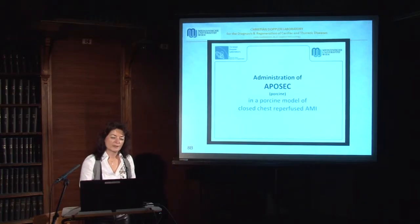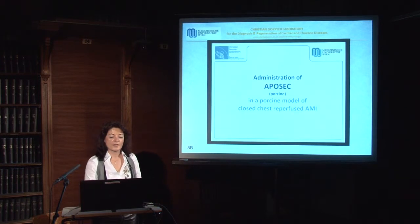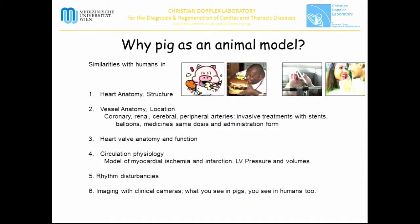After that, we wanted to prove our theory in a porcine model of closed-chest reperfused myocardial infarction. This model is the most used large animal model simulating human myocardial infarction and primary PCI conditions. Why pigs as an animal model? There are many similarities with humans — for example, the heart anatomy and structure are very similar, as are the vessel anatomy and location.